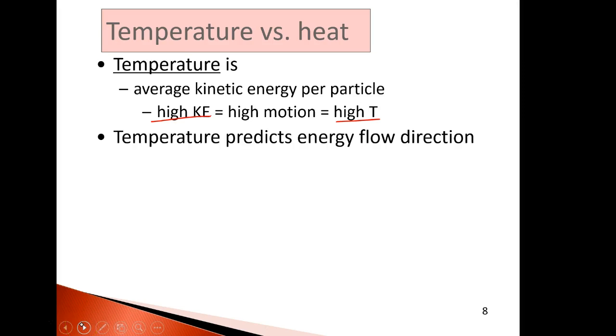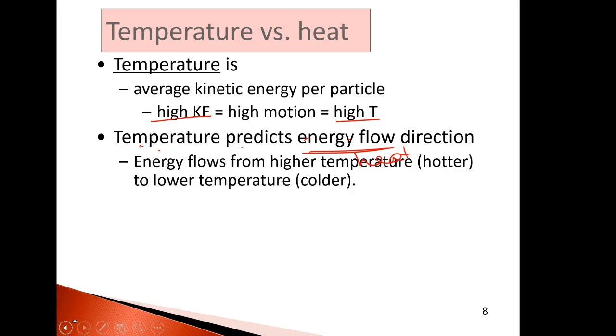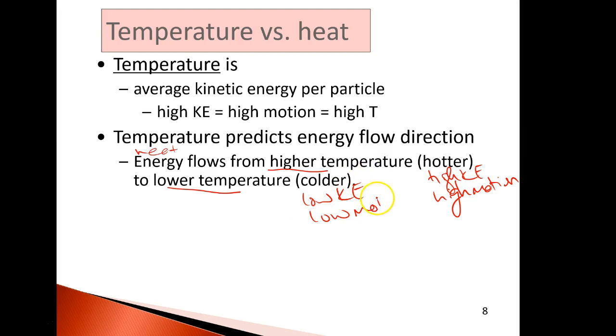Heat, on the other hand, is different. Temperature tells you which way the energy goes. That's the heat. The temperature tells you which way the heat goes. And the way it works is that heat energy, thermal energy, heat flows from high temperatures to low temperatures. That means from things with high kinetic energy and high motion to things with low kinetic energy and low motion. It never, ever travels from cold to hot. It's always that heat travels from high temperatures to low temperatures.